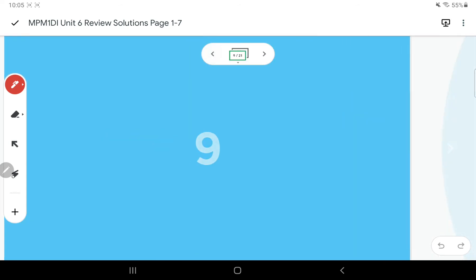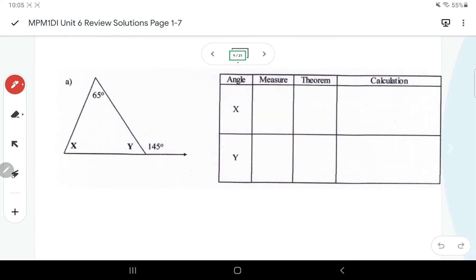So this one we've got X and Y. Personally, I would solve for Y first because I see that Y is supplementary with the 145. So I'm going to use this supplementary angle theorem and Y is equal to 180 minus 145, so I get 35 degrees for Y.